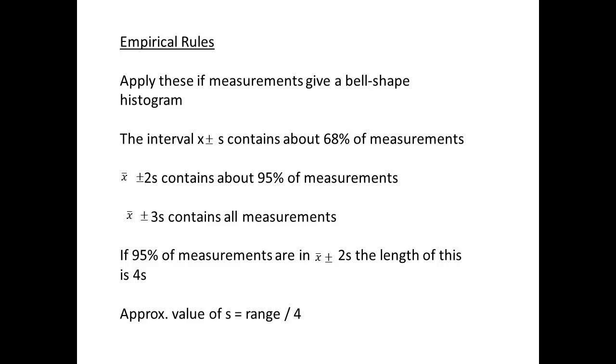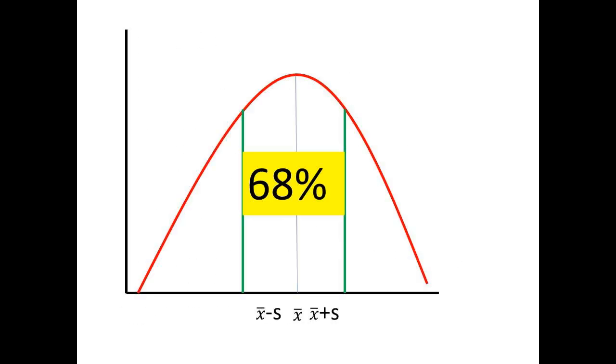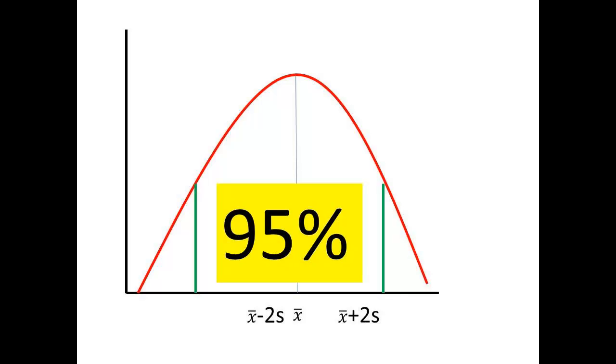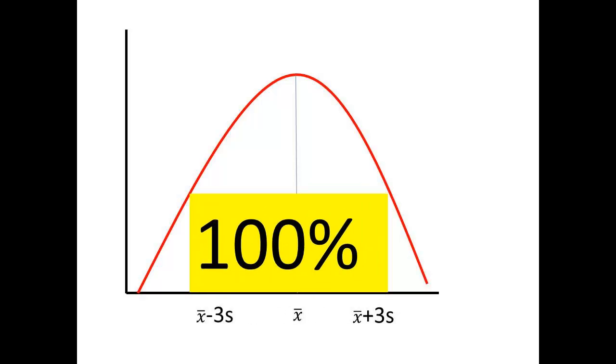If the histogram gives a bell shape, then a number of general statements can be made. The interval X̄ ± S contains 68% of the measurements. X̄ ± 2S contains about 95%, and X̄ ± 3S contains all the measurements. So we could get an approximate value for S by dividing the range by 4. Here we have shown the limits for X̄ ± S, and for X̄ ± 2S. Finally, for X̄ ± 3S.